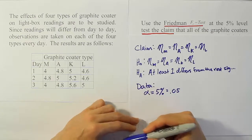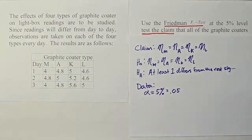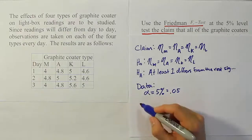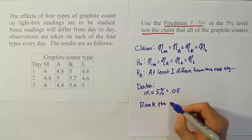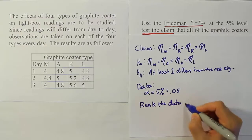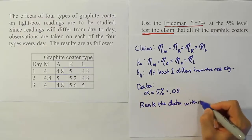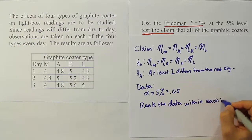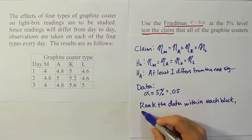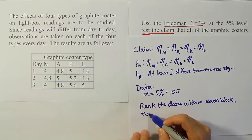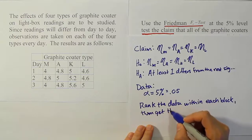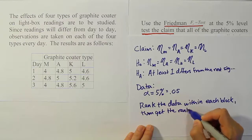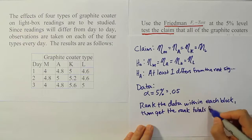And from here, let's go ahead and take the data and begin to rank it. So what we want to do here is just rank the data among the blocks. So that's all we want to do. We just want to rank the data within each block. And then at the end, then get the rank totals for each treatment.